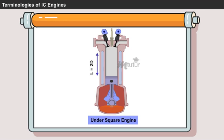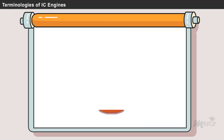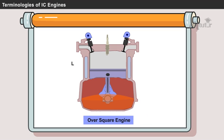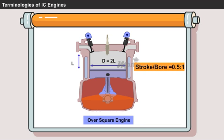If stroke length is twice the size of the bore diameter, then the engine is called an undersquare engine. If the bore diameter is twice the size than the stroke length, then the engine is called an oversquare engine.